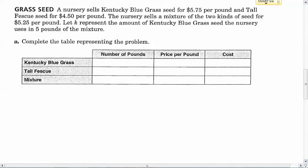I would encourage you first to see if you can work this problem out, then push play and check your answers. We've got a nursery selling Kentucky bluegrass seed for $5.75 per pound and tall fescue seed for $4.50 per pound. I'm going to put that information in right now. Kentucky bluegrass is $5.75 per pound, and tall fescue is $4.50 per pound.